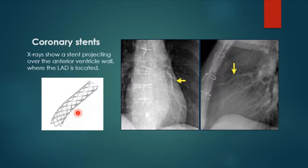Angioplasty alone does not leave a radiographic marker, but a stent will show as continuous radiopaque lines on CT — you should ask the patient whether they had a stent. In practical clinical life, 99% of prosthetic valves seen will be mitral — the most common — or aortic — the second most common. Tricuspid and pulmonary valve replacements are very rare.